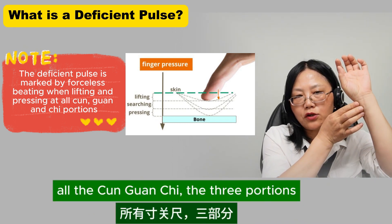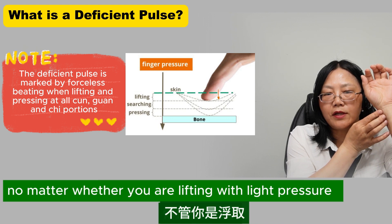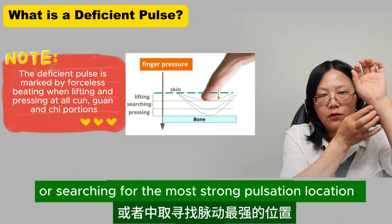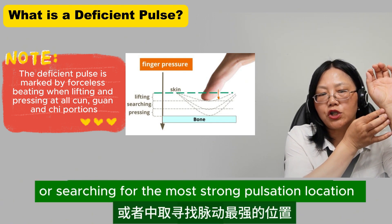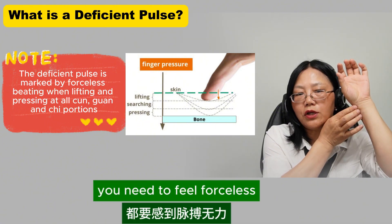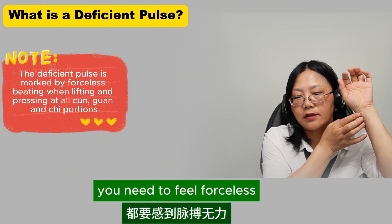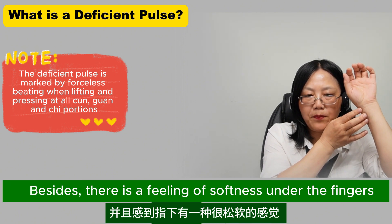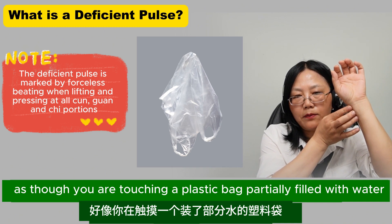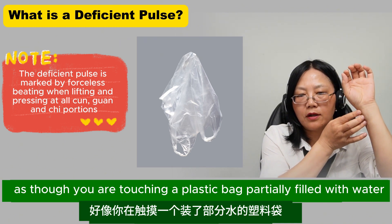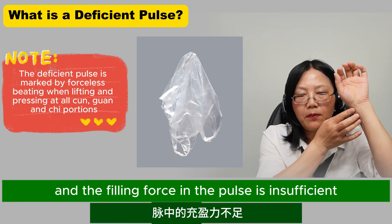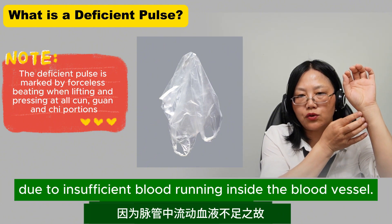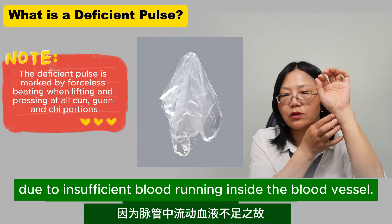All the cun guan chi — the three portions. No matter whether you are lifting with light pressure, pressing with heavy pressure, or searching the most strong pulsation location with medium pressure, you need to feel forceless. Besides, there is a feeling of softness under the fingers, as though you are touching a plastic bag partially filled with water.